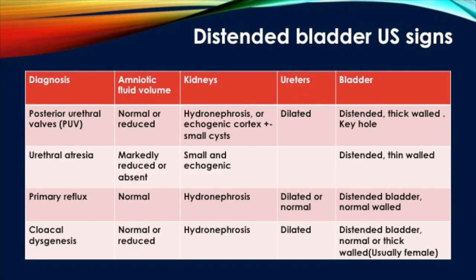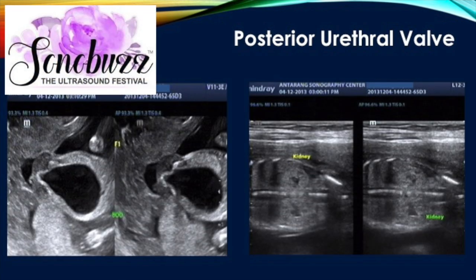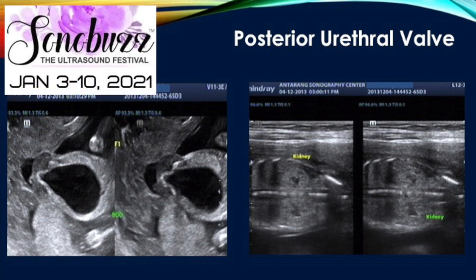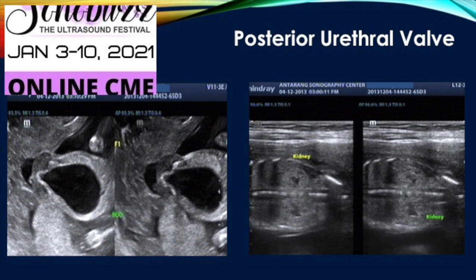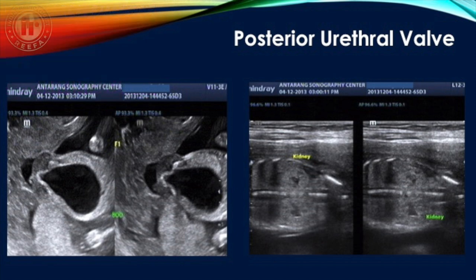The megacystis-megaureter syndrome is also a rare non-obstructive cause. Certain specific ultrasound characteristics of the bladder, ureter, kidney, and amniotic fluid can help reach a specific diagnosis. In posterior urethral valve, there is a distended thick-walled bladder with a keyhole sign. The ureters are dilated, there can be hydronephrosis, the renal cortex can be echogenic with small cysts, and amniotic fluid may be normal or reduced.